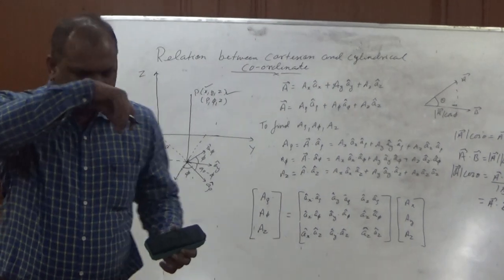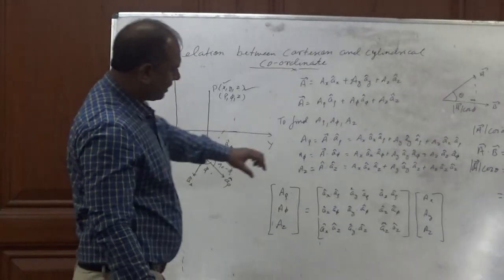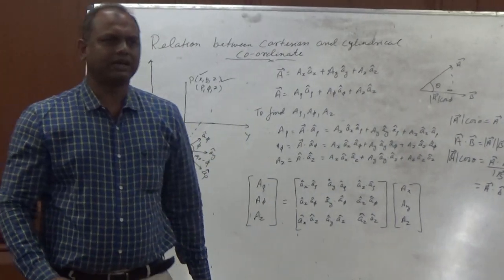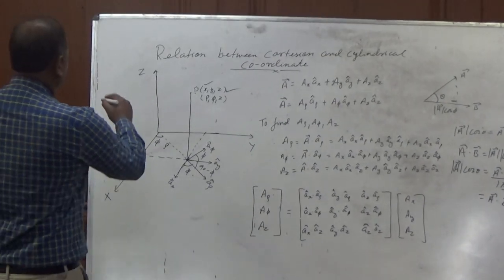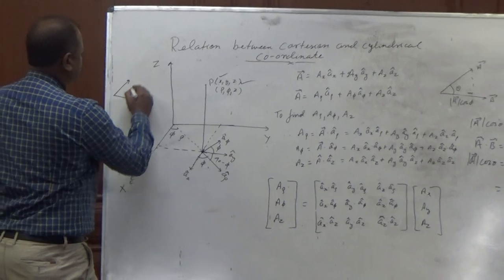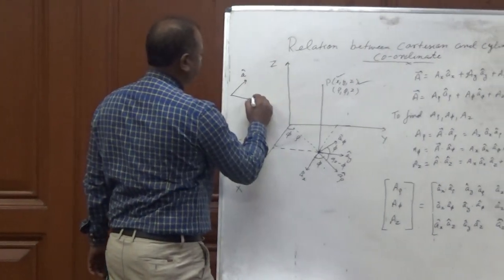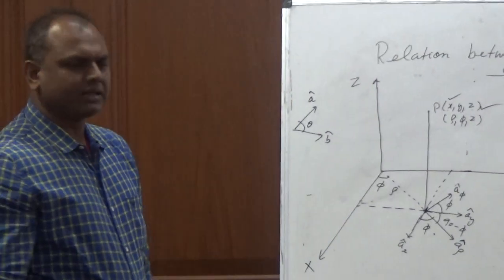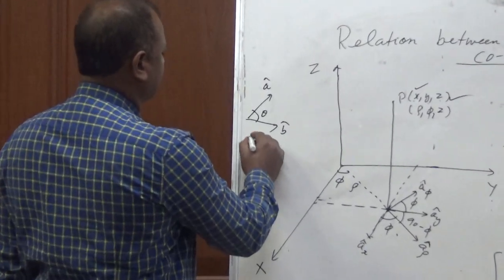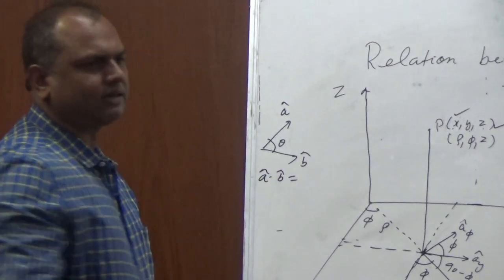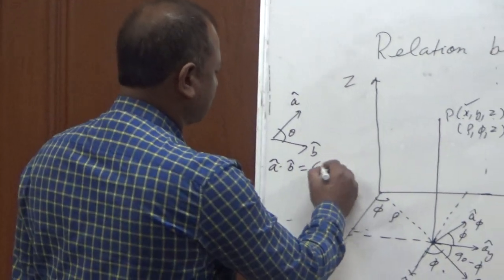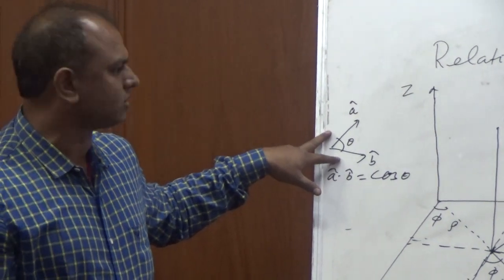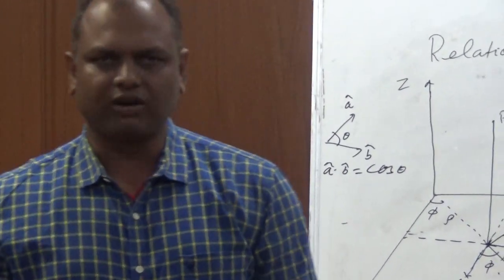Now the main thing is to find the values of these dot products. If there are two unit vectors A and B with angle theta between them, then the dot product of the two unit vectors gives the cosine of the angle between them, because the magnitude of a unit vector is 1.